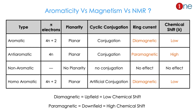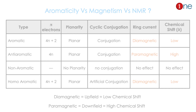You have to know the relation between aromaticity, magnetism, and NMR values. If the ring current is aromatic, it is a diamagnetic compound. If it is anti-aromatic, it is paramagnetic. Homoaromatic is also diamagnetic. So except anti-aromatic, all ring currents are diamagnetic. This has a negative correlation with chemical shift — diamagnetic means upfield, low chemical shift; paramagnetic means downfield, high chemical shift.